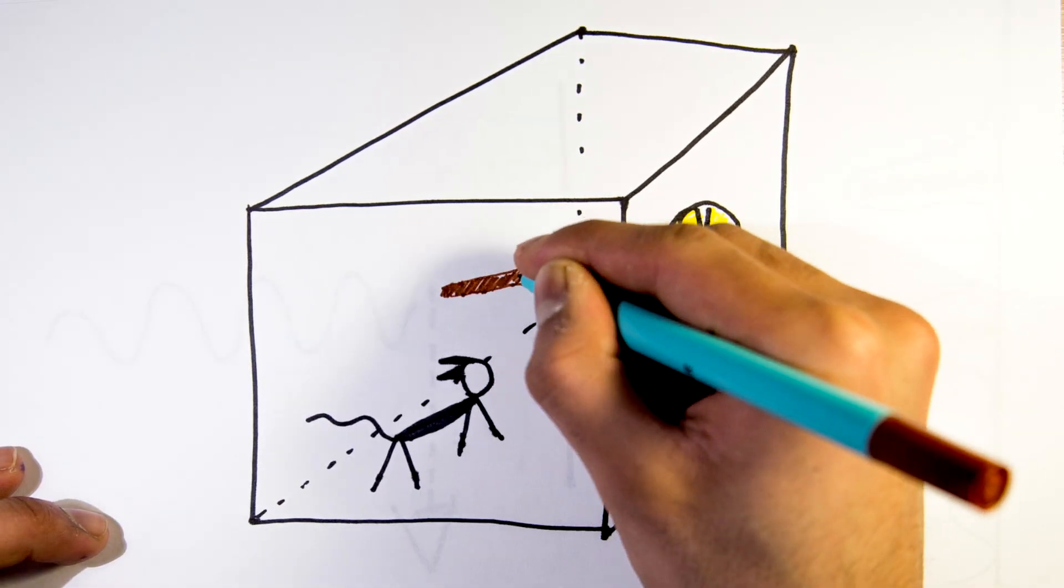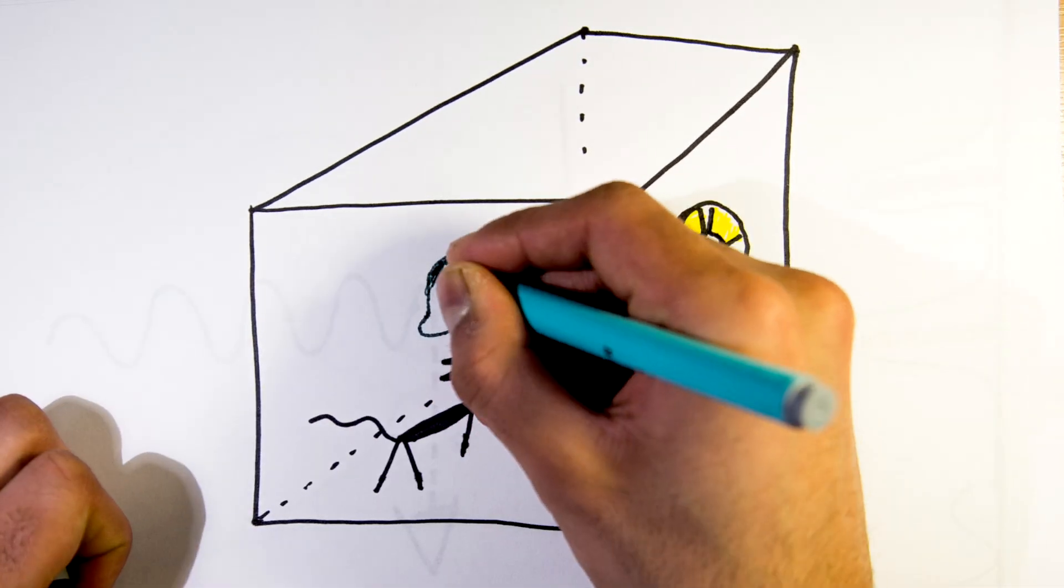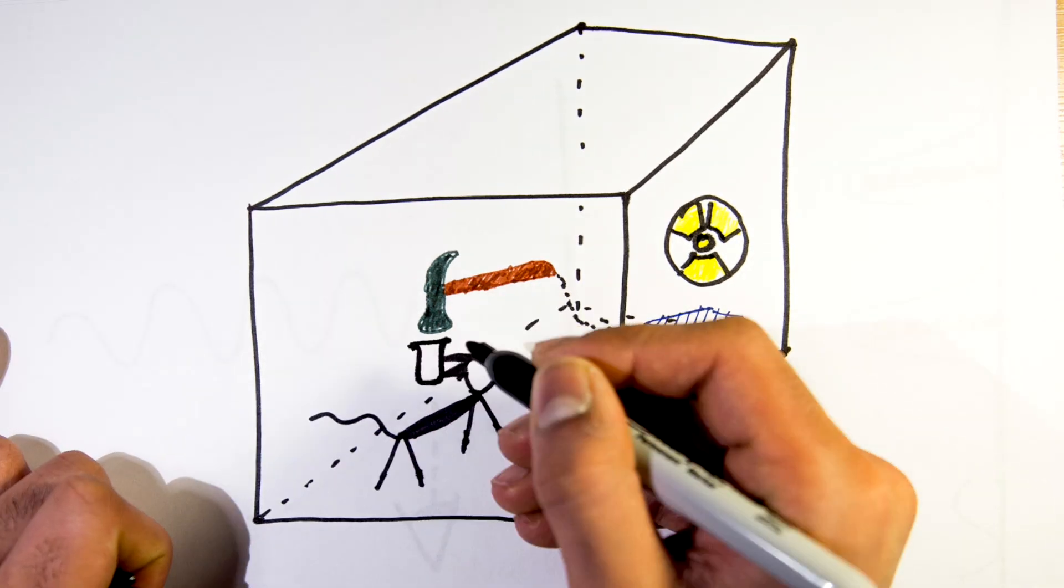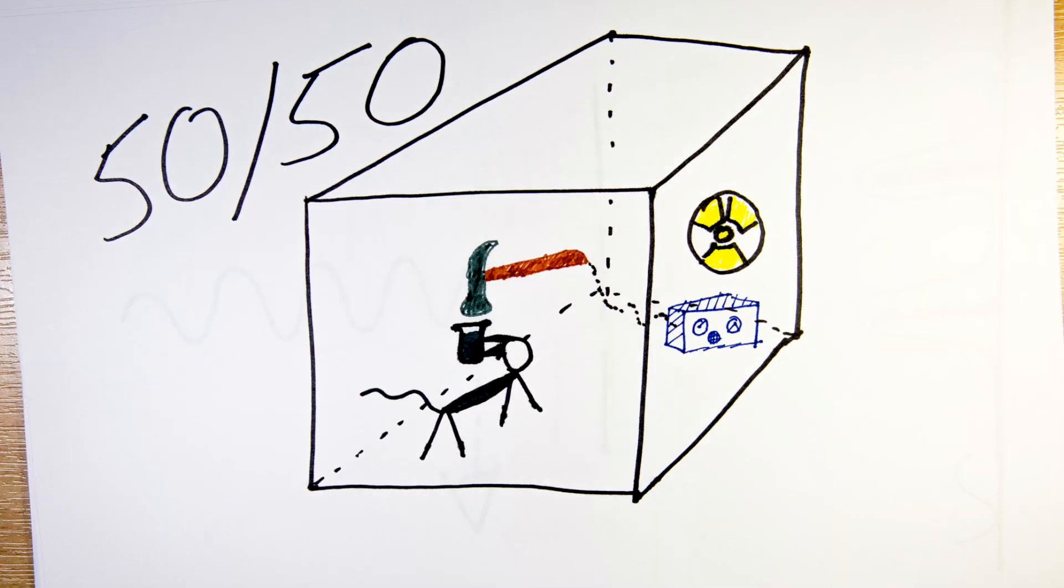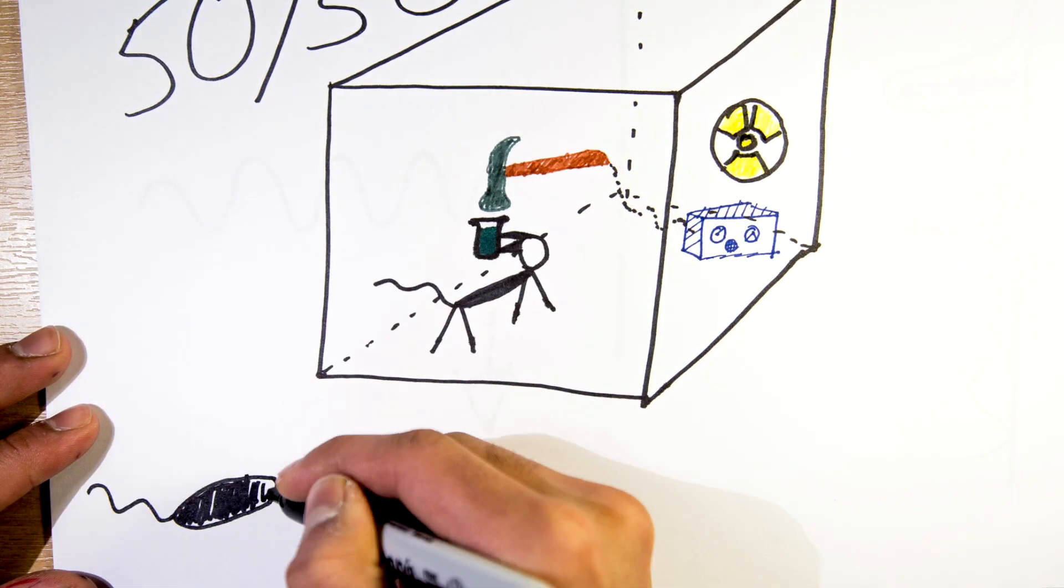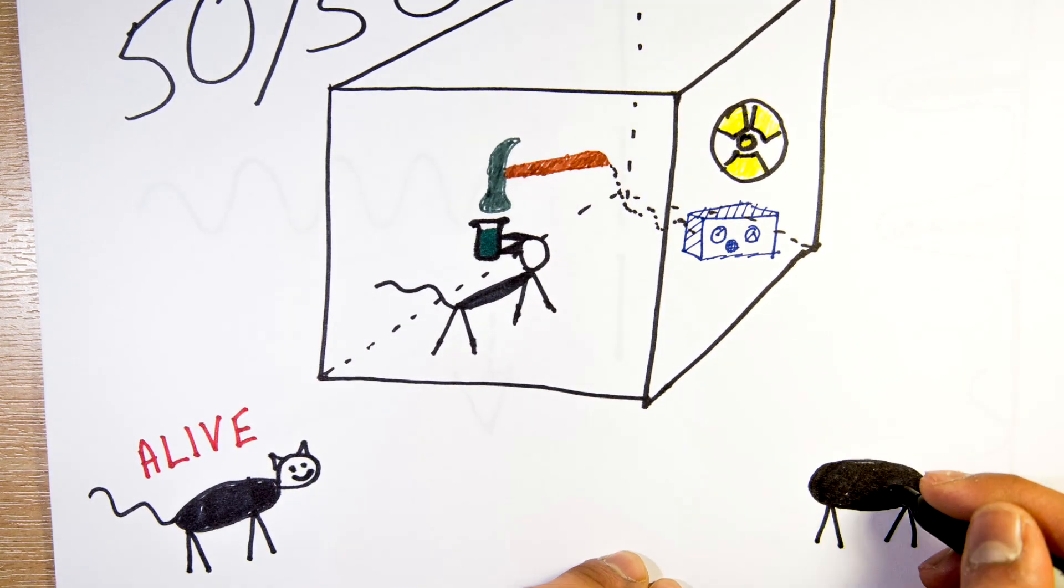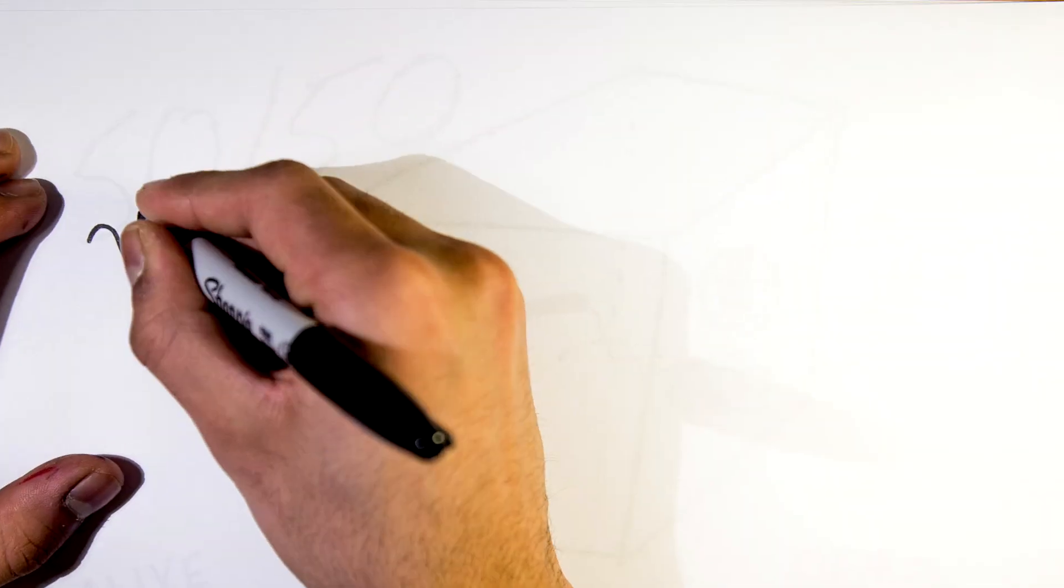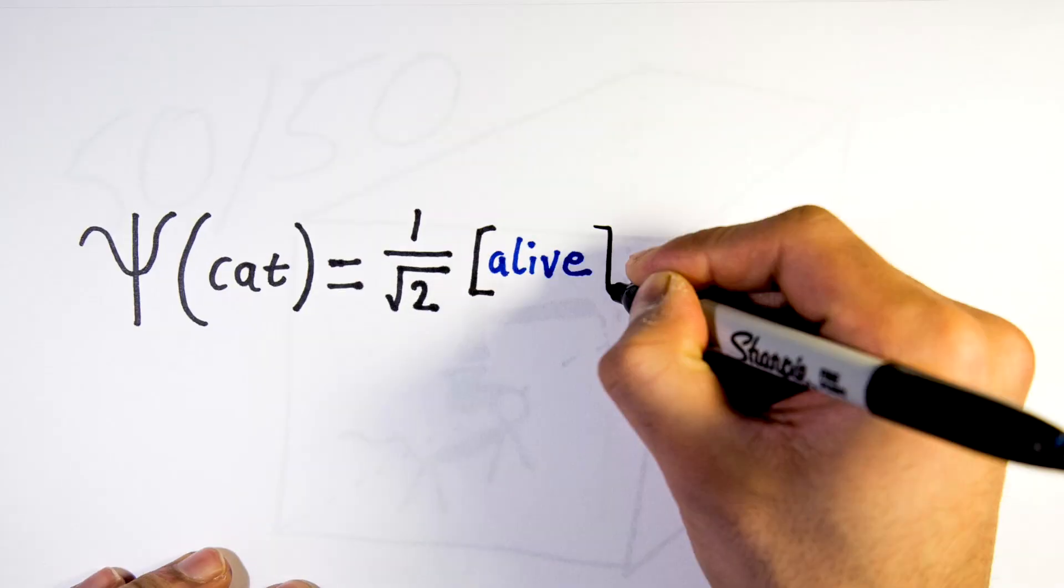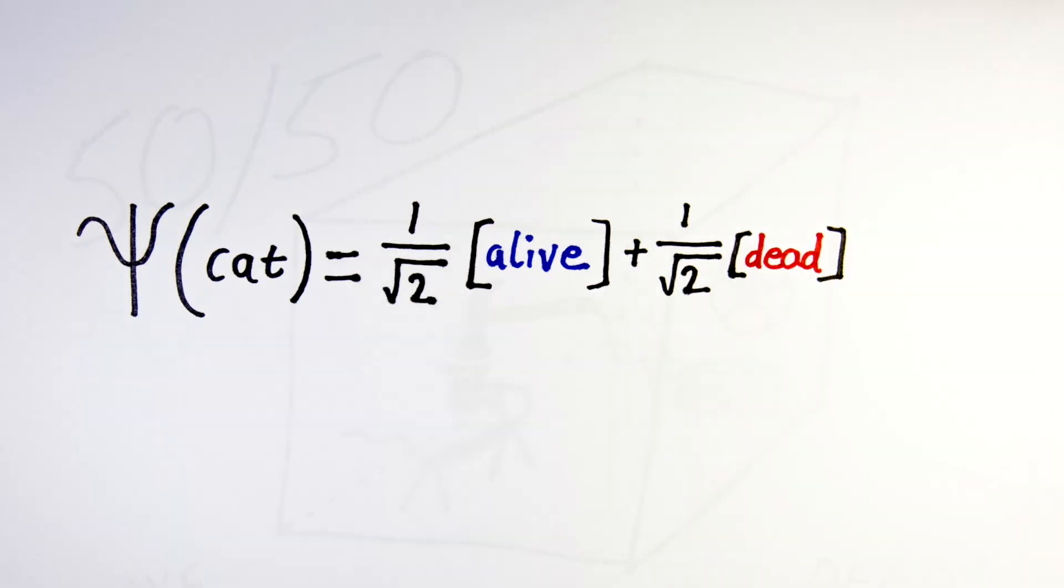We also have a Geiger counter connected to a hammer via relay, which will in turn smash a tiny bottle of poison if the radioactive substance decays, causing a very painful death for our poor cat. Before someone opens the box and checks the fate of the cat, the cat can be thought of as being in a superstate of both dead and alive.